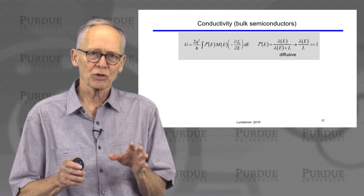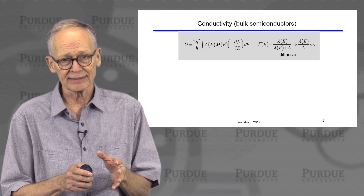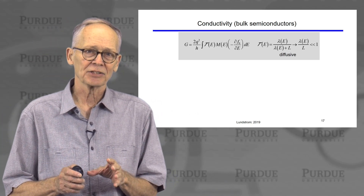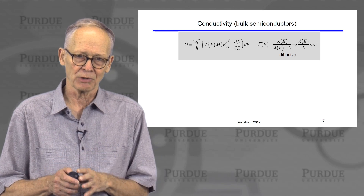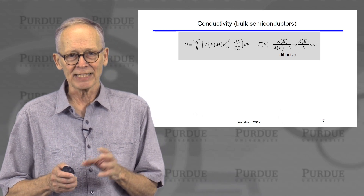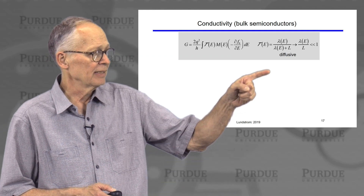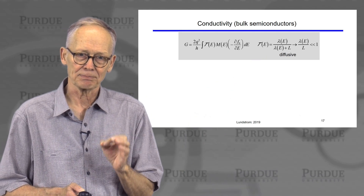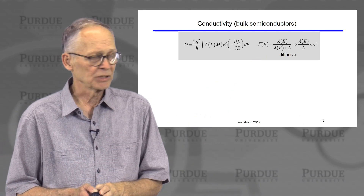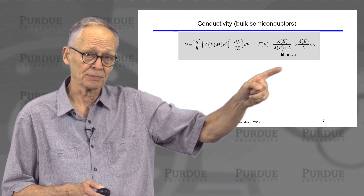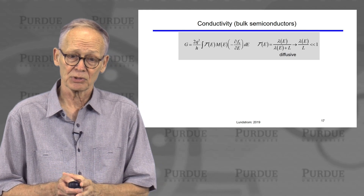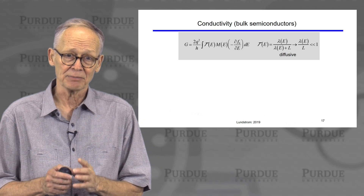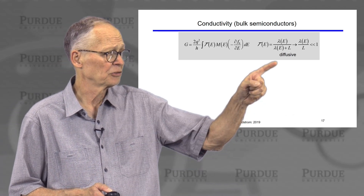This applies to short ballistic devices, to long devices, and to everything in between. We're interested in conventional thermoelectric technology — devices that are many mean free paths long. Here is a simple expression for the transmission in terms of the mean free path for backscattering, λ. When the device is very long, the transmission becomes very small; when the device is very short, the transmission approaches one. We're focused on the case where the device is many mean free paths long, so the transmission is very small.